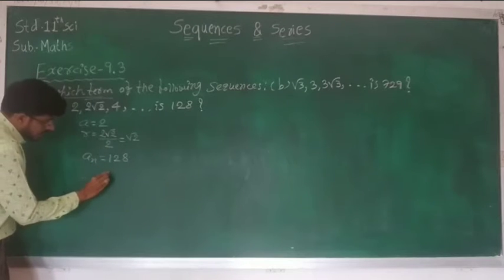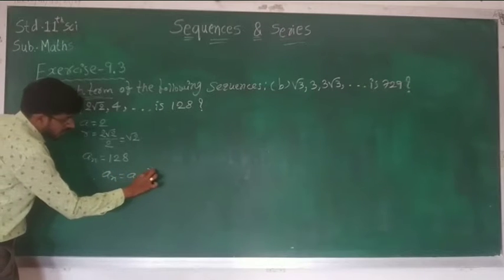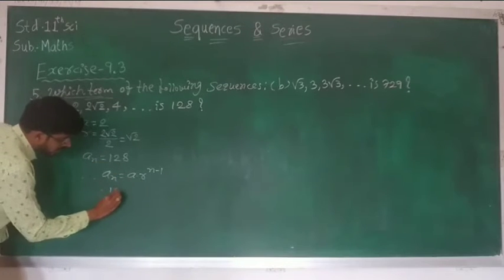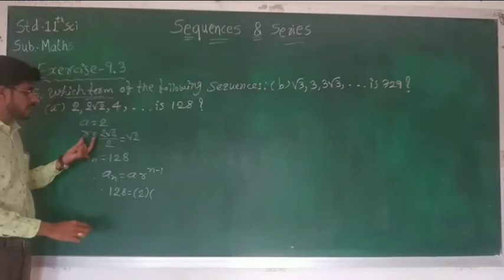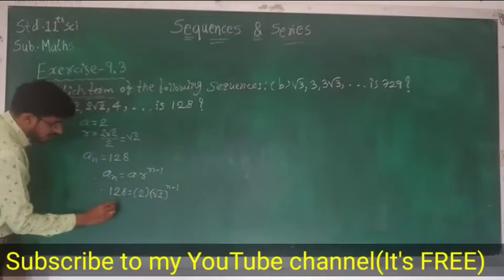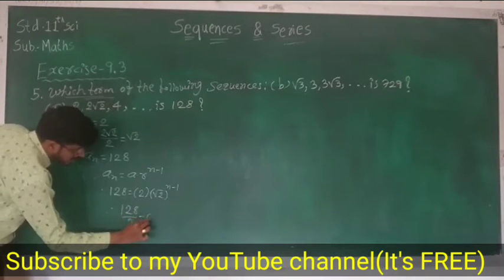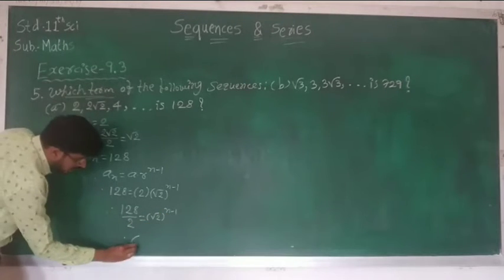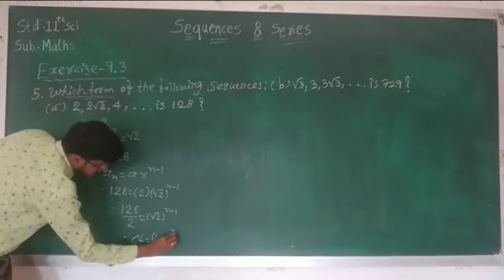Therefore, a_n is equal to a into r raise to n minus 1. Here the nth term is 128, so 128 is equal to a, where first term is 2, into r which is √2 raise to n minus 1. Now divide by 2, so we get 64 is equal to √2 raise to n minus 1.